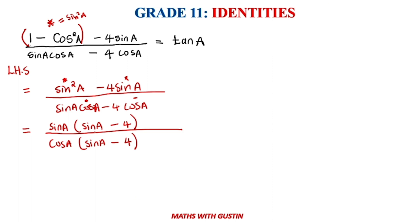So what do you have here? You would realize now that you've got sinA - 4 at the top and then you've got sinA - 4 at the bottom. Therefore, this would cancel out and therefore, you are left with sinA all over cosA, which in terms of identity is going to be equal to tanA. Therefore, which is equal to the right-hand side.